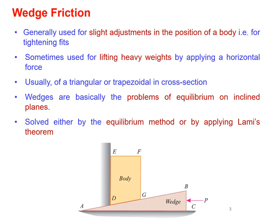First, let us see what is meant by wedge friction. In the diagram, you can see the wedge and the body. Normally these wedges are used for making slight adjustments in the position of a body — for example, tightening fits. The wedges are also used for lifting heavy weights by applying a horizontal force; the wedge moves forward, making the body move upwards.